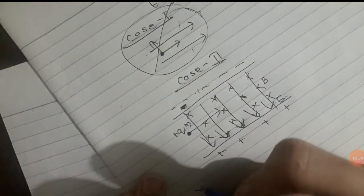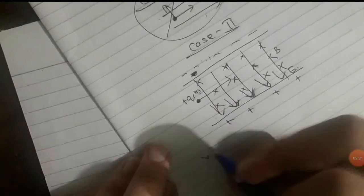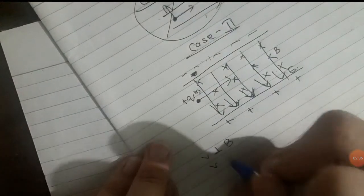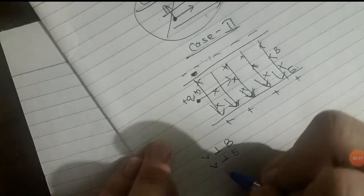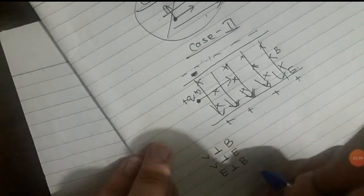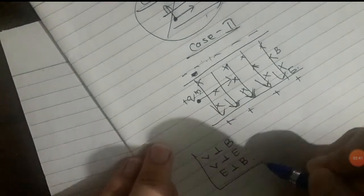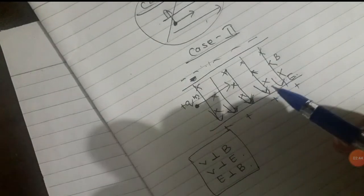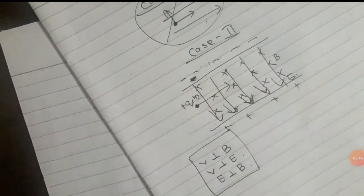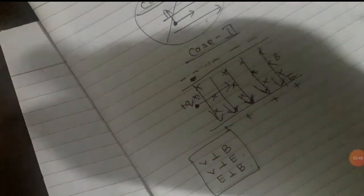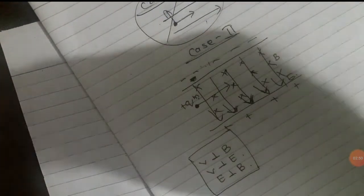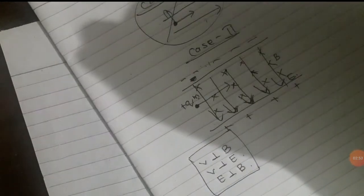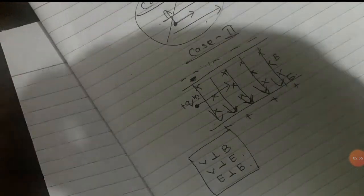So velocity is perpendicular to the magnetic field, velocity is perpendicular to the electric field, and the electric field is perpendicular to the magnetic field. In the case of these three conditions, what is the direction of the force? That is what we are going to discuss in Case 2.